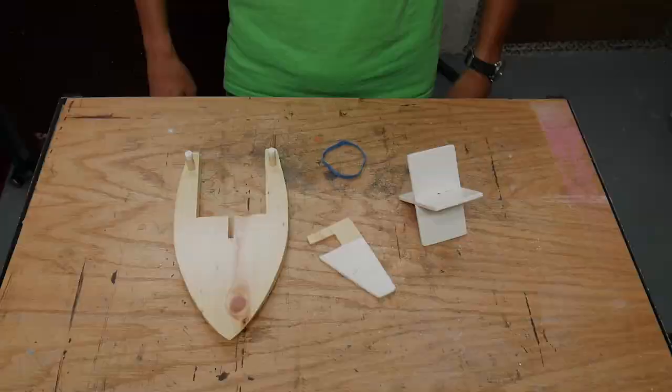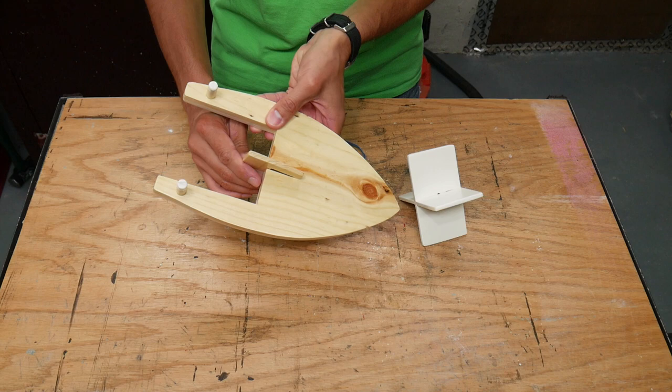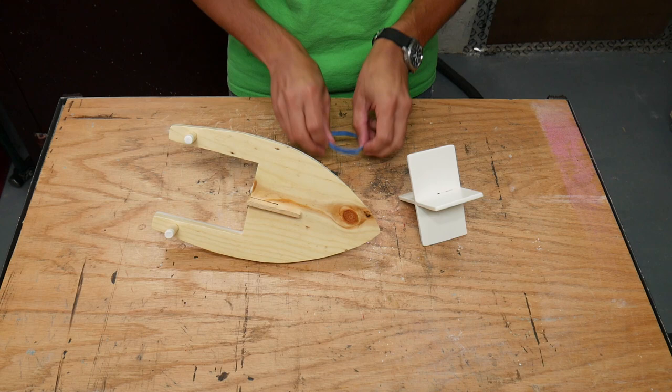To assemble the boat I slid the keel into place. I designed it so the keel was removable but it could have been glued into place or omitted altogether. I got a nice fat rubber band and slid it over the paddle. Then stretched it over the two posts.